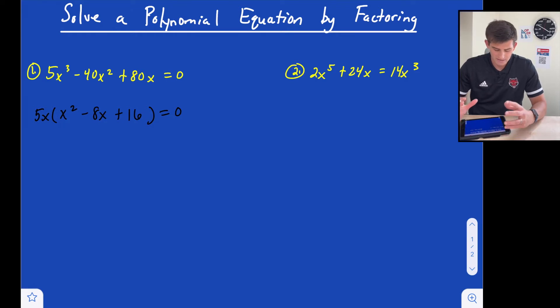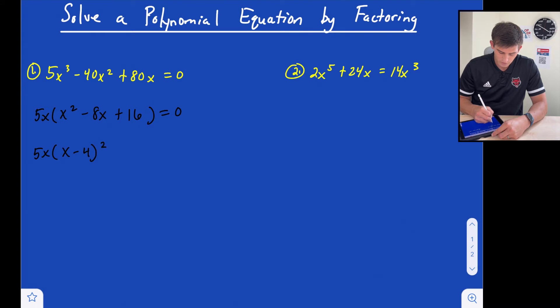So now we notice inside the parentheses we have a trinomial. And we have x squared minus 8x plus 16. So hopefully you're recognizing that this is a perfect square trinomial. So it's actually going to factor as x minus 4 quantity squared.